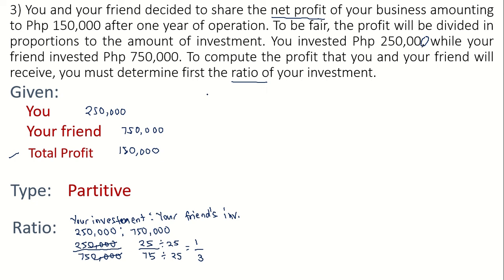The ratio is 1 is to 3. This 1 represents your part and this 3 represents your friend's part. Your friend invested more, so the friend has 3 parts. Since we already have the ratio and the total, we can proceed to form the equation.